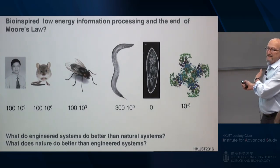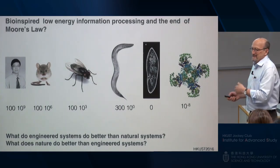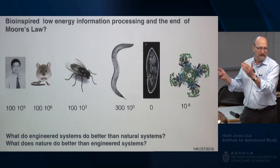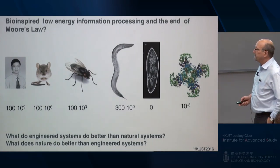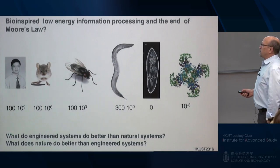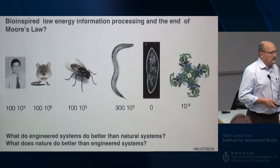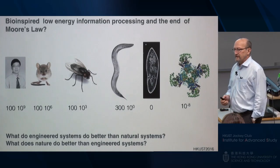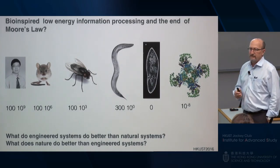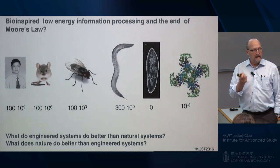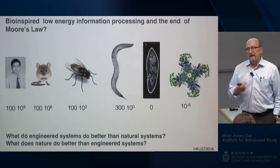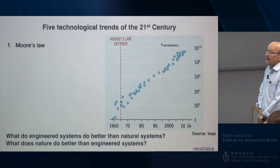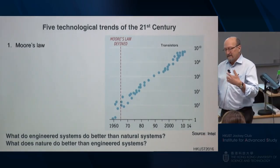Even a part of a neuron is involved in computation — these numbers span many orders of magnitude. The core question in bio-inspired engineering is: what do engineered systems do better than natural systems, and what do natural systems do better than engineered systems? And ultimately, are there things we can do by combining the two that neither can do alone?